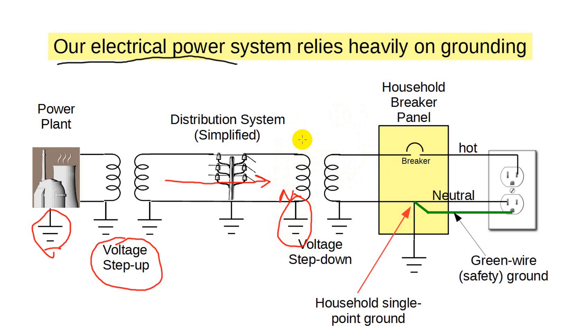When the local step-down transformer is encountered, again the neutral side is held at ground potential. This goes into your house and note here an interesting thing. There is a single point ground. The neutral connects to it. A wire exits your entrance point to a ground rod and the safety ground or green wire ground is connected at this point too.